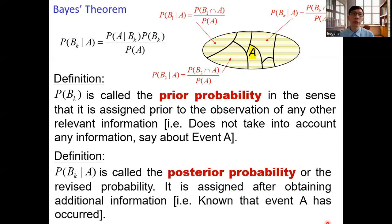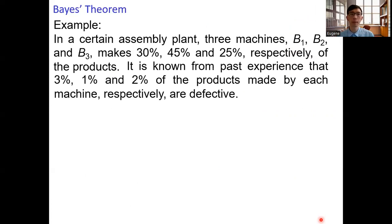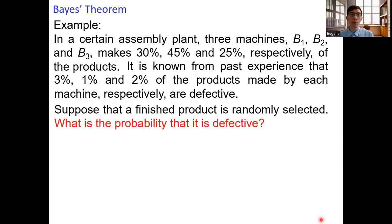Alright, so this is the theory part of Bayes' theorem. Let's move on to an example. In a certain assembly plant, three machines B1, B2, and B3 make 30%, 45%, and 25% respectively of the product. It is known from past experience that 3%, 1%, and 2% of the products made by each machine respectively are defective. Suppose that a finished product is randomly selected. What is the probability that the product is defective?